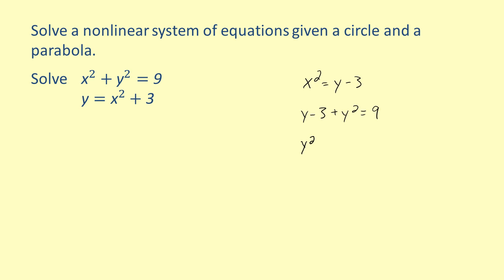Now that our equation is in terms of only one variable, y, let's rewrite the equation by setting it equal to zero. To do this, we will subtract nine from each side of the equation and combine like terms. The result is y squared plus y minus twelve is equal to zero. Notice that this quadratic can be easily factored. Since the first term is y squared, we know that the first term in each factored term will be y. The product of the second terms will be equal to negative twelve, while the sum of the second terms will be one. So by factoring, we get the quantity y minus three times the quantity y plus four equals zero.